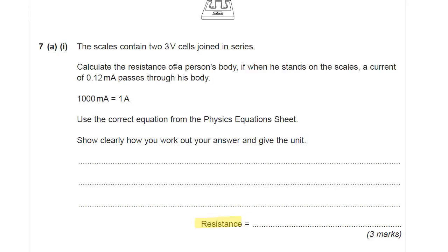You've got some data. Have a look at that. You've got two 3-volt cells in series. So before you do anything, think about the size of that potential difference. A current of 0.12 milliamps passes through his body. And milli, we don't like to use milli, so think about how to use this bit of information to convert that into amps.